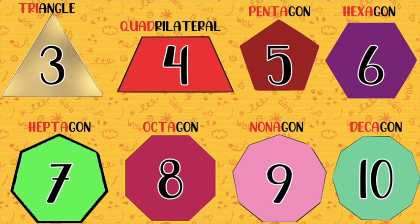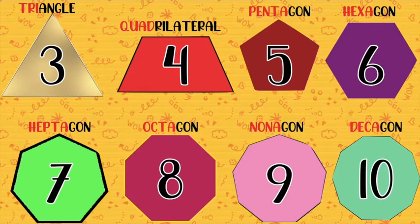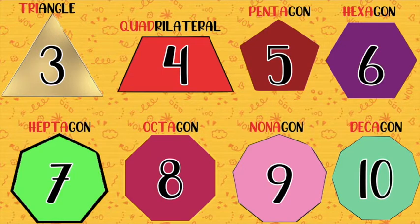For you to memorize it easily, always remember: triangle from the word 'tri,' that is three. Quadrilateral from the word 'quad,' that is four. Pentagon — 'penta,' that is five. Hexagon — 'hexa,' that is six. Heptagon — 'hepta,' that is seven. Octagon — 'octa,' that is eight. Nonagon — 'nona,' that is nine. And lastly, decagon — 'deca,' that is ten. So let's count from three up to ten using tri, quad, penta, hexa, hepta, octa, nona, and deca. Is that clear, children?